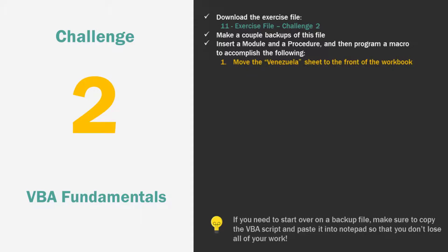Start by moving the target worksheet — in this case, Venezuela — to the front of the workbook. After that, each sheet requires the following adjustments. Pretty soon we're going to learn how to accomplish these tasks all at once using a loop, which we're going to learn about in an upcoming video. It's going to be awesome. But for now, the manual repetition is actually really good for retention.